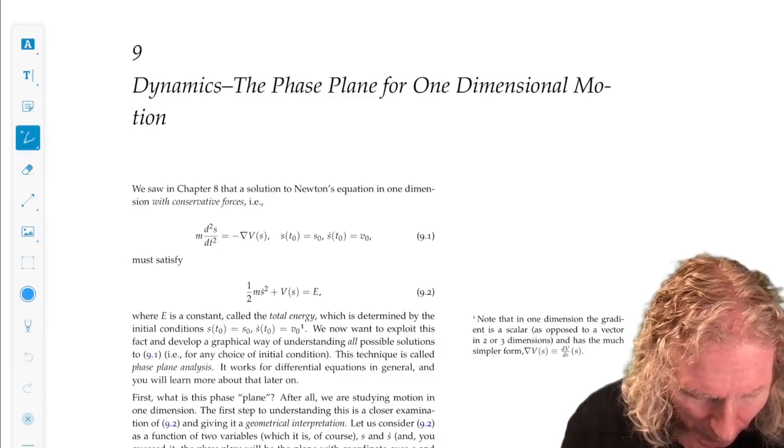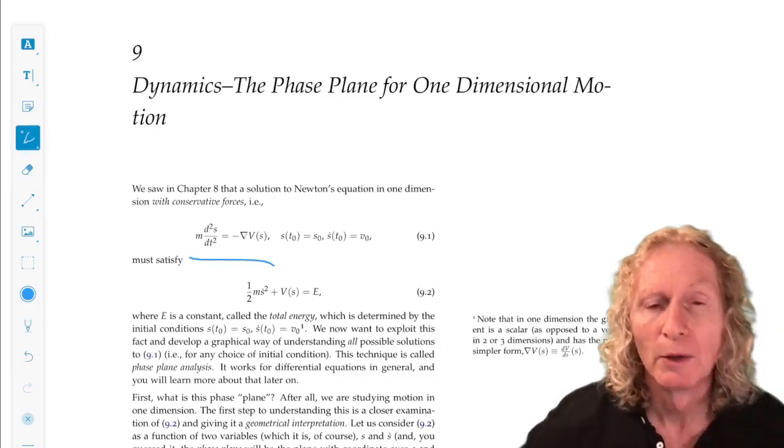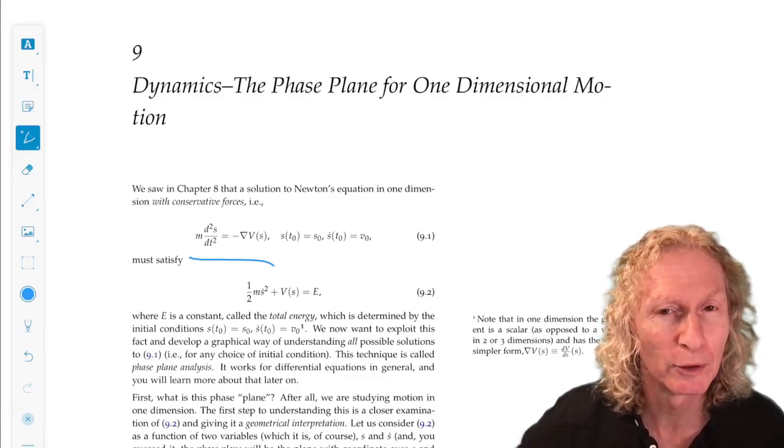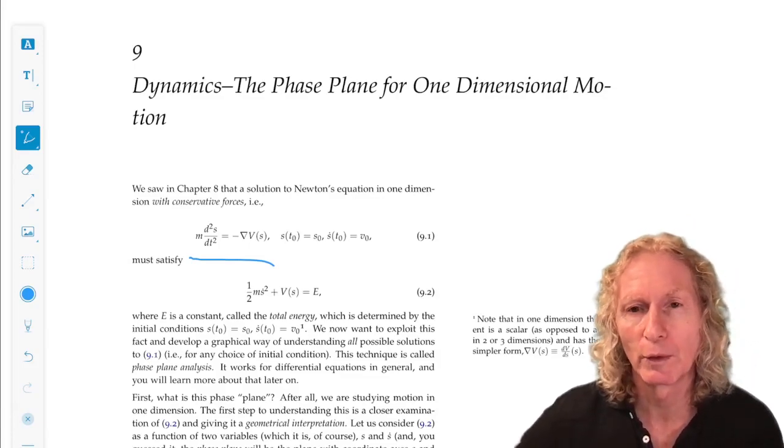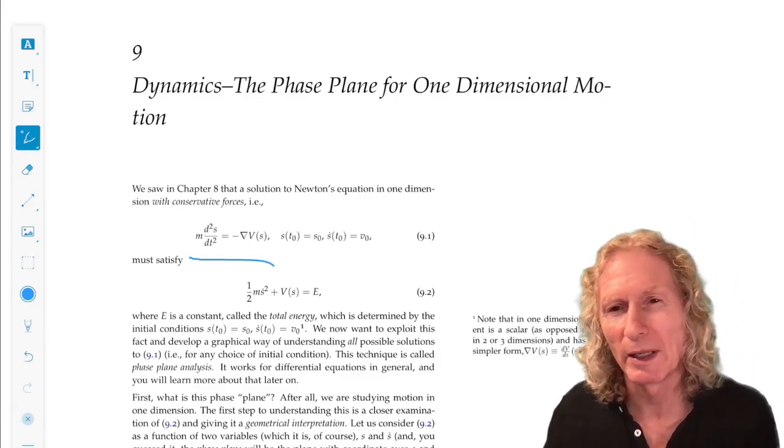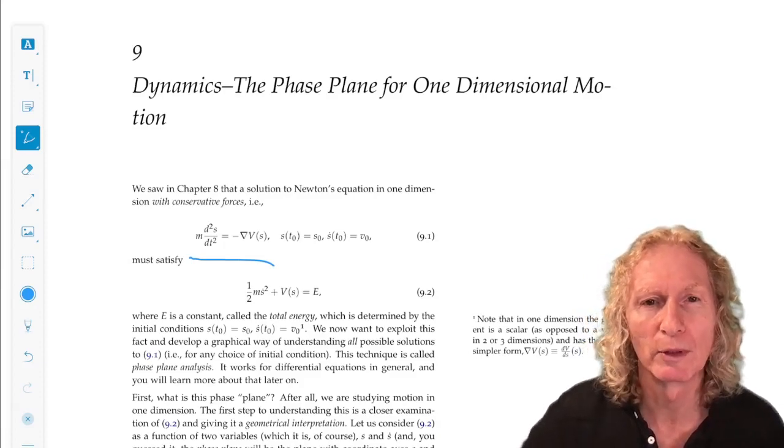Newton's equations under the action of a conservative force. So the force is minus gradient of a potential function, scalar valued function of one variable. So that gradient would just be the derivative in this case.